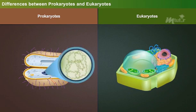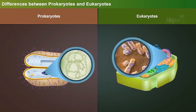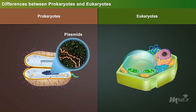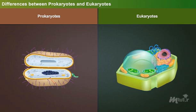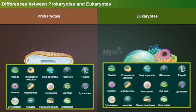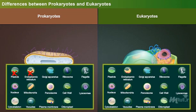In prokaryotes, the DNA is circular, while in eukaryotes it is linear. Plasmids are present in prokaryotes but are rarely seen in eukaryotes. In prokaryotes, the cell membrane may have infoldings called mesosomes; however, mesosome is absent in eukaryotes.